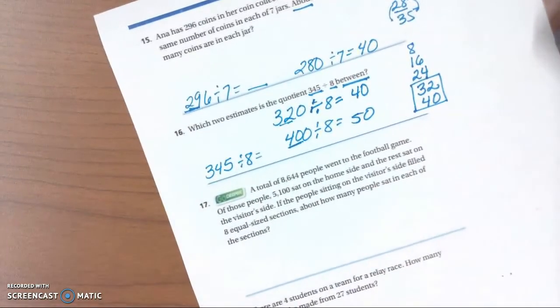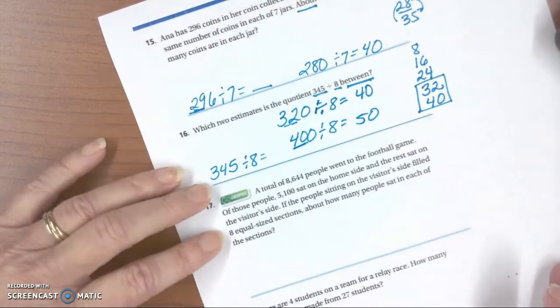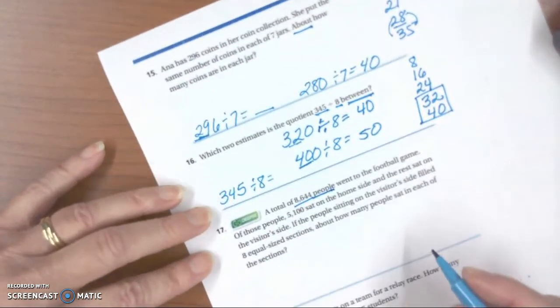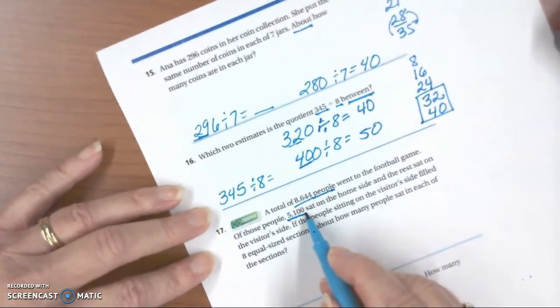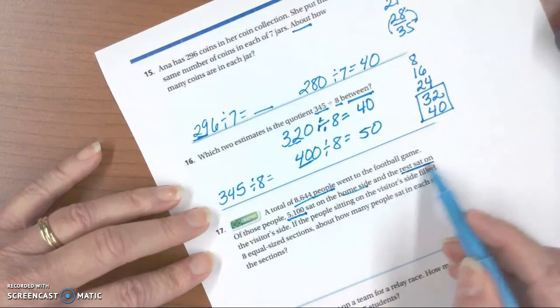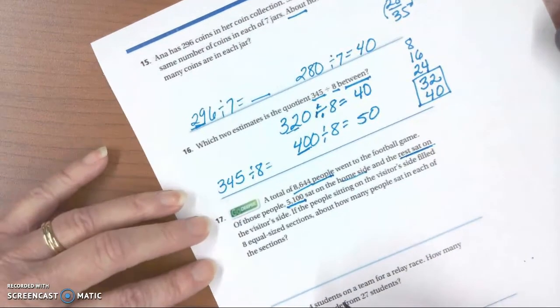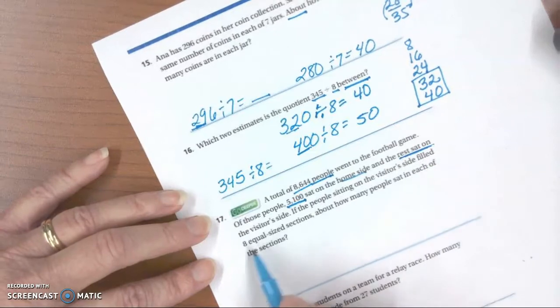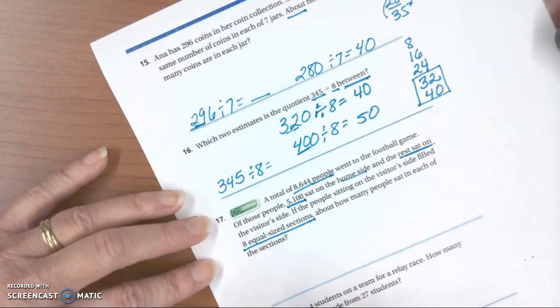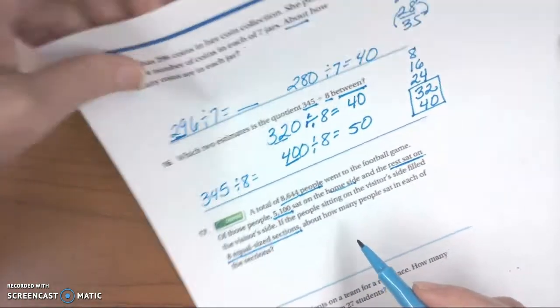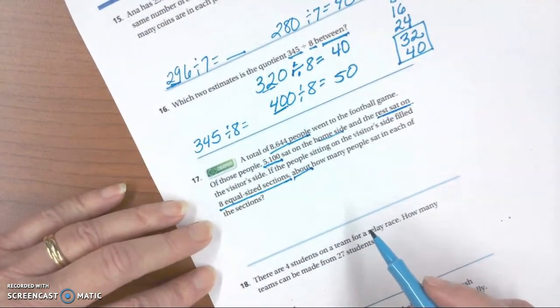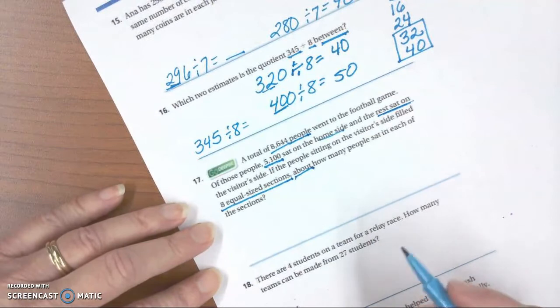The next one is a going deeper problem. So we're going to solve it. A total of 8,644 people went to the football game. Of those, 5,100 sat on the home side. The rest, so that looks like we're going to be subtracting, sat on the visitor side. If the people sitting on the visitor side filled 8 equal size sections, that's our division cue right there, about our estimation cue, how many people sat in each section.